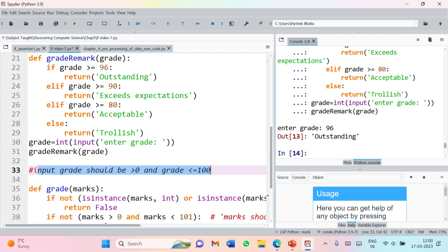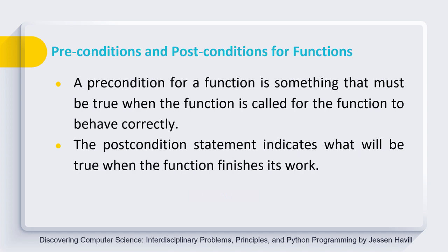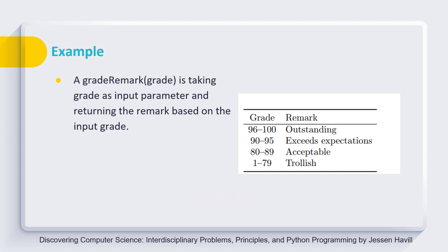Defensive programming must ensure that the function runs only if these preconditions are satisfied. If any precondition is not satisfied, the function should return false or an appropriate error message rather than executing the code. Preconditions are the conditions that must be true when the function is called; otherwise the function will not behave correctly. Post conditions are statements that will be true when the function finishes its work. If the precondition — input is greater than 0 and less than or equal to 100 — is met, the function guarantees a desirable output as per the grade remark table. I hope you now have a fair idea about preconditions and post conditions.